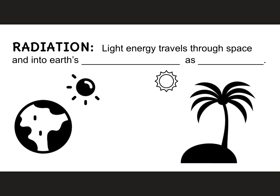The first step in how Earth's atmosphere is heated is through the process of radiation. Radiation occurs when light energy travels through space and into Earth's atmosphere as light. Let's take a look at how this happens.